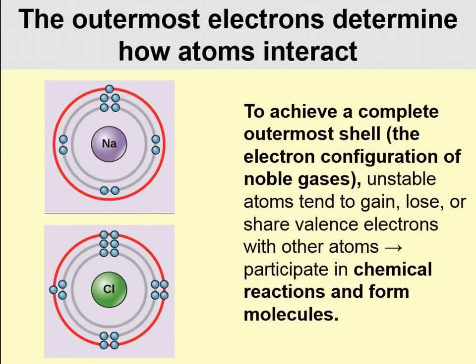The outermost shell of electrons determines how atoms interact. If sodium and chlorine come together, we have table salt. Chlorine needs only one more electron in its outer shell, and sodium needs one less electron in its outer shell. So sodium is going to donate its outermost electron to chlorine, and they're both going to have a full electron shell. Unstable atoms gain, lose, or share valence electrons — the electrons in their outermost shell — and this is what we call a chemical reaction and a chemical bond.